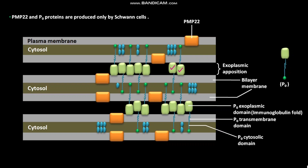The cytosolic tail of each P0 protein binds to the phospholipids in the opposite membrane. As a result, close apposition of the cytosolic faces of the membrane is formed — in other words, cytosolic apposition is formed.